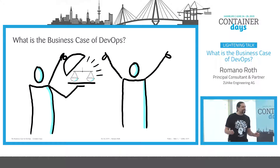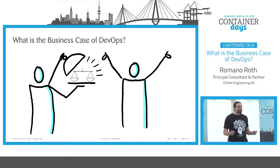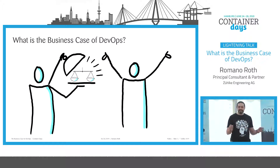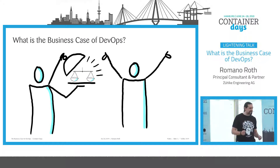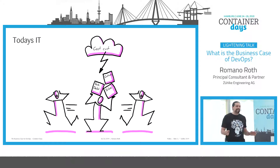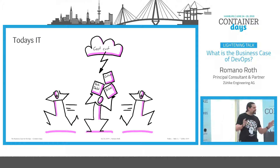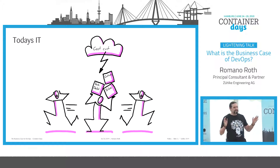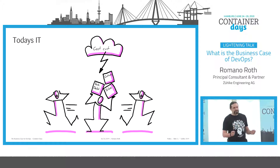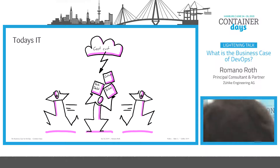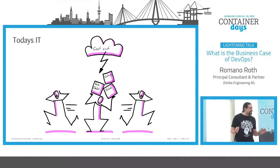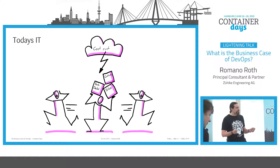What is the business case of DevOps? Today's IT has a lot of problems. They have technical debt in their application landscape and in their applications, and also in their infrastructure. There are silos which are not working together but are fighting against each other. There is a culture which does not accept risk and innovation, and there is a complete lack of trust. Overall, we have cost cuts — we need to do more with less money.